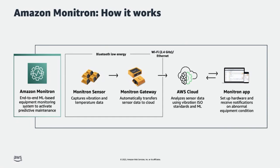These wireless Bluetooth sensors can be set up and enabled using near-field communication with the Amazon Monitron mobile app. These sensors are built to optimize for simplicity and cost. It includes a fully managed gateway that securely and automatically transfers the sensor data to the cloud. In the cloud, the Monitron service analyzes the sensor data using vibration ISO standards and machine learning. Finally, the Monitron apps are used to set up the sensor and gateway and to receive notifications on the abnormal condition of the assets.